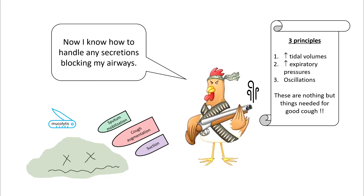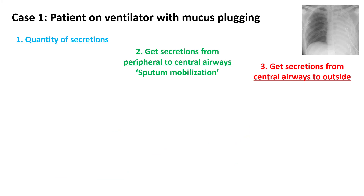So there are only four methods we can use to clear secretions: sputum mobilization, cough augmentation, suctioning, and mucolytics. Let's do a few examples. You have a patient on the ventilator with mucus plugging.